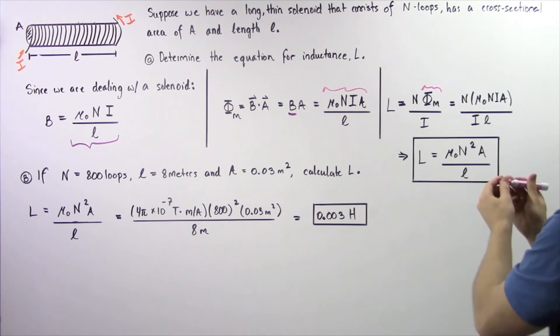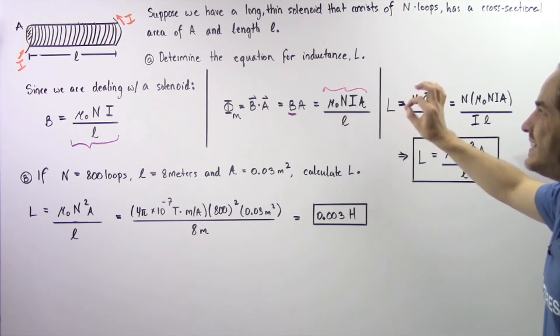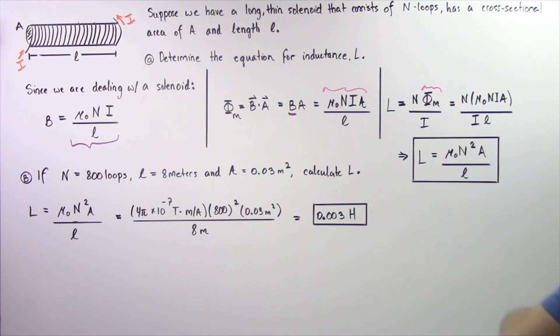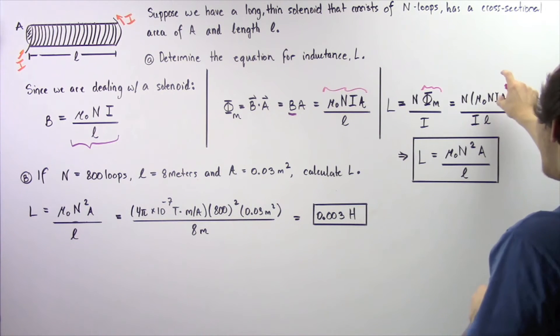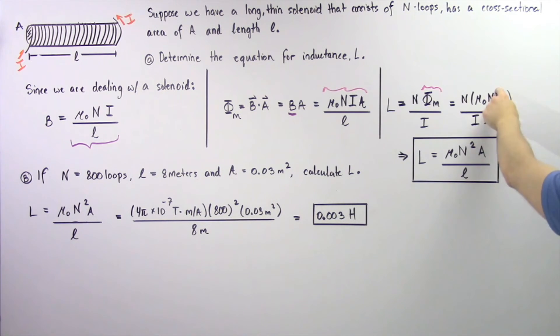We get the following result. Our inductance L is equal to the product of N μ₀ N I A divided by I times L. Notice the I's appear on top and bottom, we can cancel them out and we get the following equation. We also combine our N's because we have two N's.